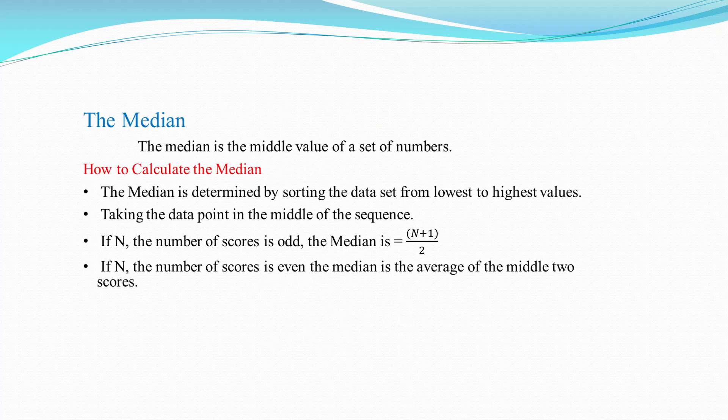The median is the middle value of a set of numbers. The median is determined by sorting the data set from lowest to highest values and taking the data point in the middle of the sequence. If n (the number of scores) is odd, the median formula is (n + 1) / 2. If n is even, the median is the average of the middle 2 scores.